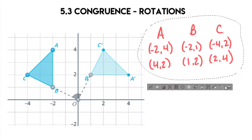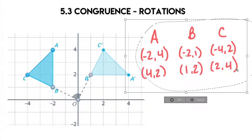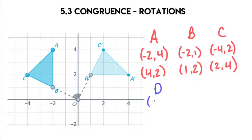So now when I'm looking at these values, I'm looking for what is the pattern happening — what was the same thing that was happening for each one of these points? Negative 2, 4 coming into 4, 2. Negative 2, 1 coming to 1, 2. And negative 4, 2 coming to 2, 4. If you are paying attention, this is flipping each time. A 90-degree rotation causes the X and Y values to switch places. So for example, if we had a fourth point D at 5, 3, after the rotation it would be 3, 5. It just flip-flops the two values.